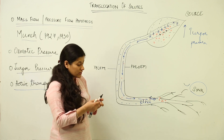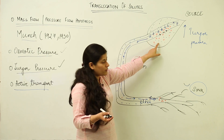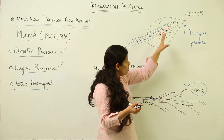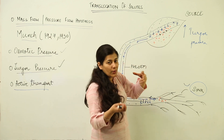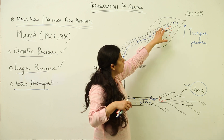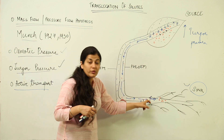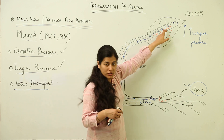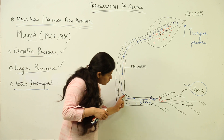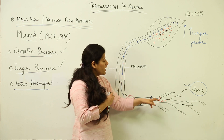To recap: first, photosynthates — sucrose particles — are formed at the source, which is the leaf. These sucrose particles are actively transported into the phloem. When actively transported, the phloem content becomes osmotically active, and water is drawn from the adjacent xylem by osmosis. As water enters the phloem, turgor pressure is generated, and this turgor is in gradient with the lower turgor at the sink. Both are connected by the phloem, and the phloem sap flows as mass flow, carrying solute particles to the sink.